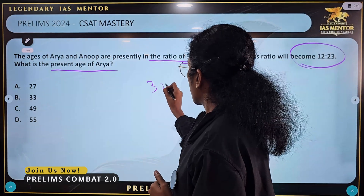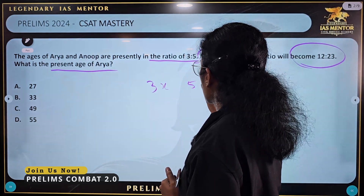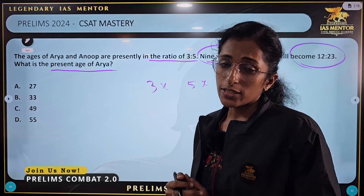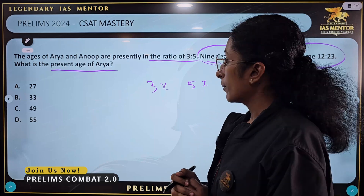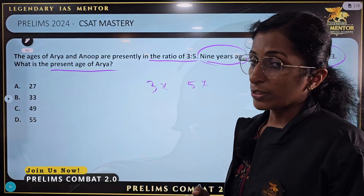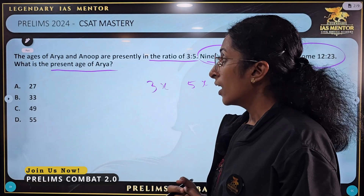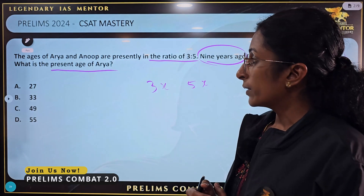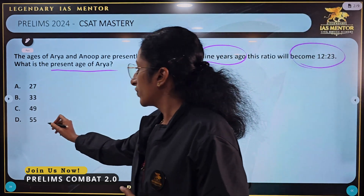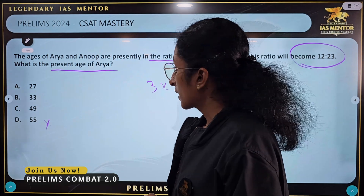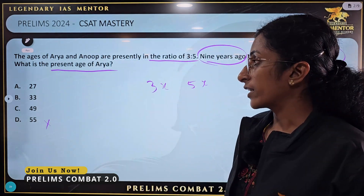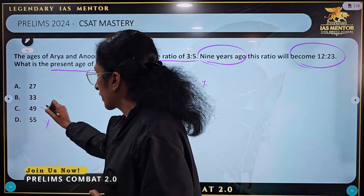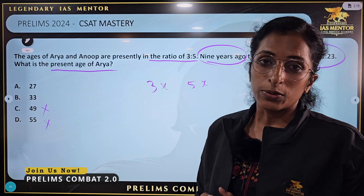Then we have 3X and 5X. What should we have to do in the options? The options are to be checked for 3X and Tanoop. The D option is 55 — 55 is not a multiple of 3, so we cancel it. The C option is 49 — 49 is also not a multiple of 3. So we go to options A and B: 27 and 33.